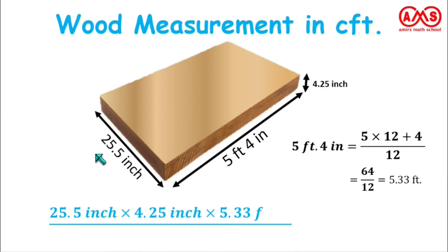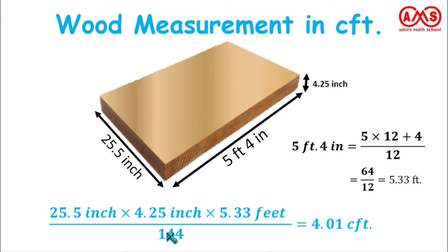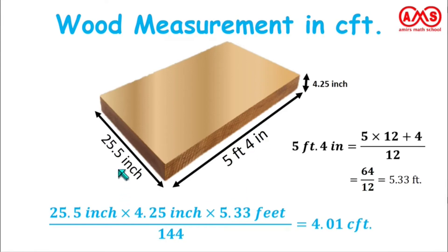Now we work with this value. According to the formula: 25.5 inch times 4.25 inch times 5.33 feet, divided by 144, which gives the value of 4.01 CFT. The thickness and breadth are entered exactly as given, and the length is converted to feet. We put this value in the formula — length times thickness times breadth in feet, divided by 144 — which gives the measurement of the wood as 4.01 CFT.